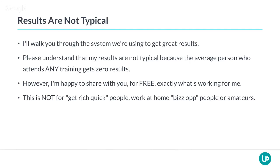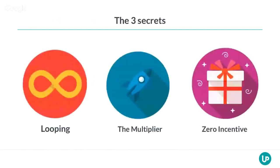I'm going to share three secrets with all of you, and I call them: Looping, the Multiplier, and Zero Incentives. Secret number one — Looping — is something every business should have in their business. By adding these loops, you immediately increase the amount of leads you're going to get. All it takes is two simple lines of code, and using these loops you'll be able to easily double the conversion rates on your opt-in forms while getting higher quality leads at the same time.